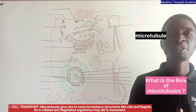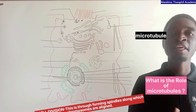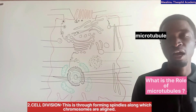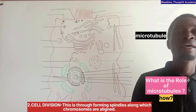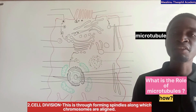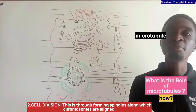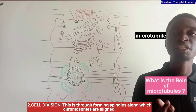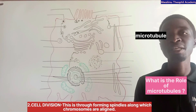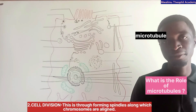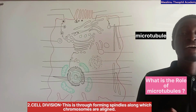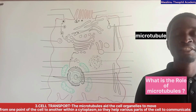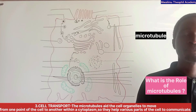The second role of microtubules is that they are involved in cell division. They form spindles around which the chromosomes are aligned. The third role of microtubules is that they are involved in cell transport.